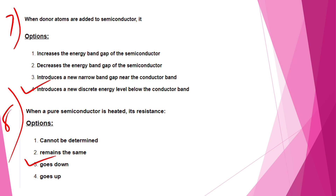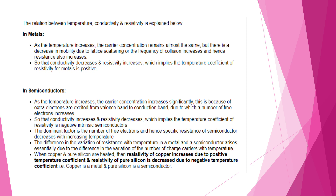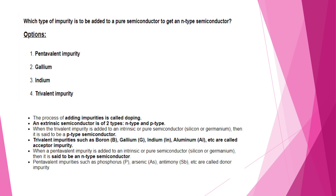Resistance goes down — the relation between temperature, conductivity, and resistivity: in metals, as temperature increases, carrier concentration is almost the same but there is a decrease in mobility due to lattice scattering; frequency of collision increases, hence resistance also increases. In the case of semiconductors, the temperature coefficient is negative — conductivity increases and resistivity decreases.